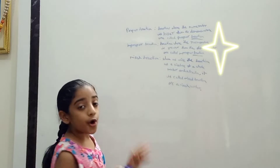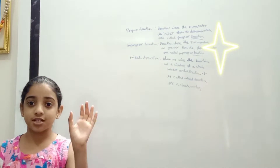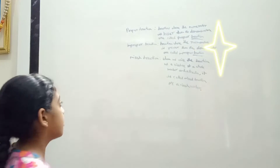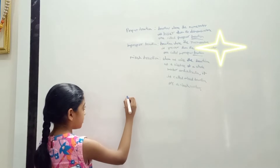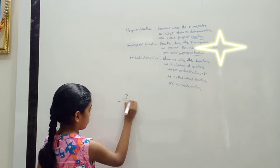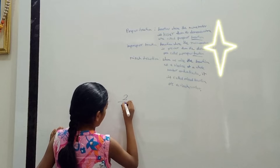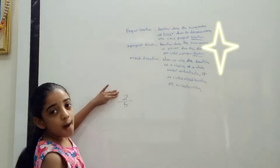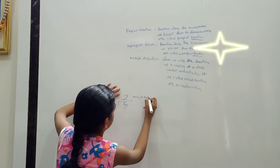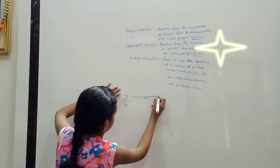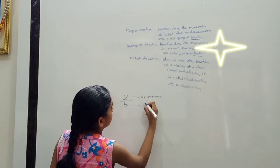Now let's see an example for proper fractions. First let's see what is the numerator and denominator. For example, I'm writing 2 over 5. The upper number is called the numerator, and the bottom part is called the denominator.